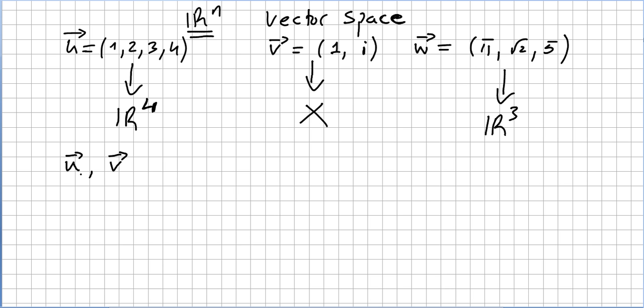If I have a vector u and a vector v, both in R^n in some space, when can I say that u equals v? When can I say that two vectors are the same?